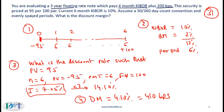This security is priced at 95 per 100 par. So 95 is the current price. Current six month Kybor is 10%, Kybor is the Karachi interbank offer rate. It is effectively like LIBOR. This is our reference rate. Assume a 30/360 day count convention and evenly spaced periods. What is the discount margin?